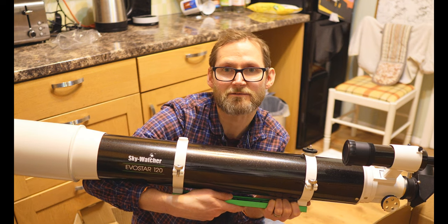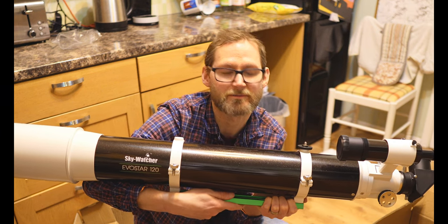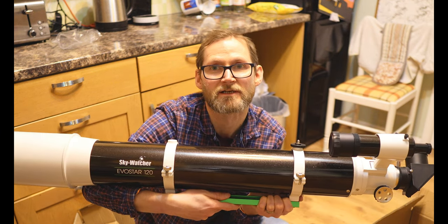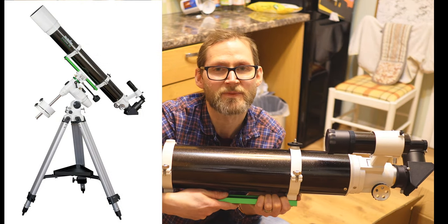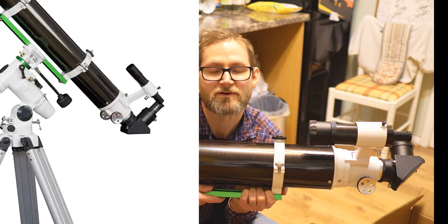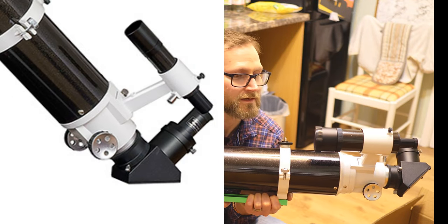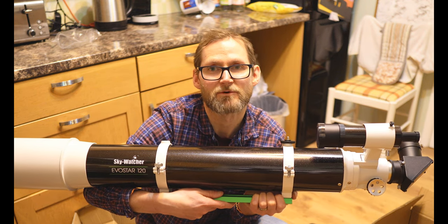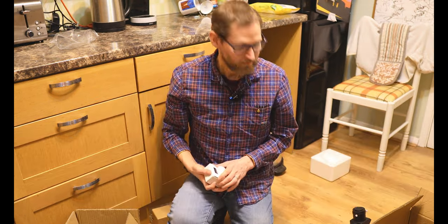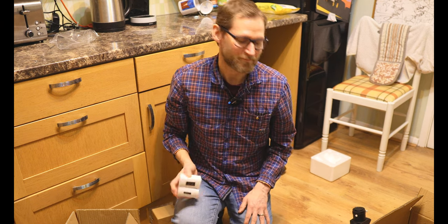Yeah, I think it's got 33 percent more light grasp than the four inch version because they do an Evostar 102 mil and that comes with a 30 mil finder which is smaller. So you do get the bigger finder with the 120, 4.75 inch model.